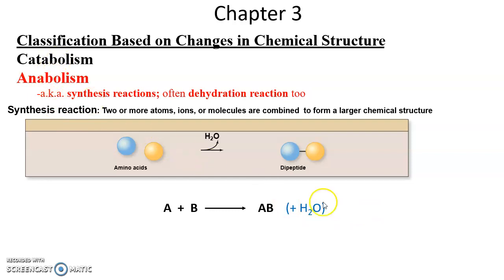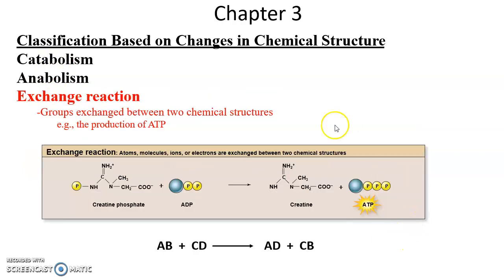Exchange reactions are when parts of two different chemicals, or one part of something, is moving from one side to another, changing, moving from one side to another. Creatinine phosphate and ADP can become creatinine and ATP by the movement of a phosphate group from creatinine phosphate to the ADP. So AB plus CD becomes products AD plus CB.